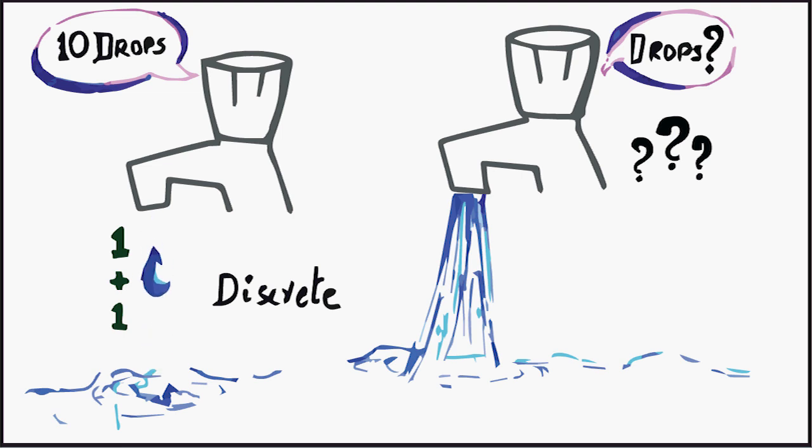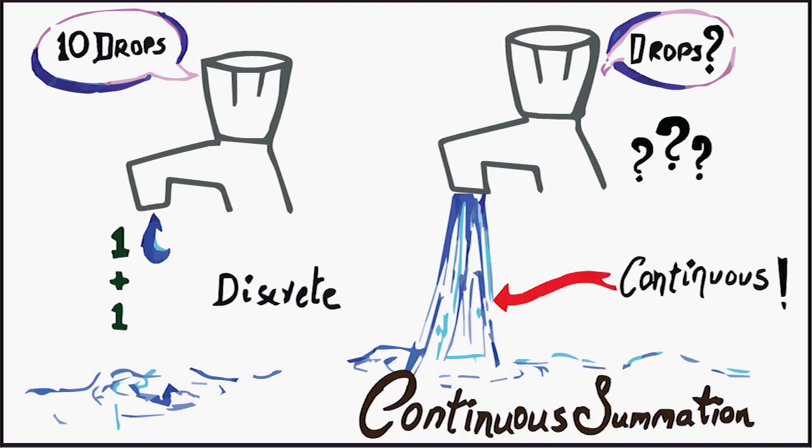On the other hand, when the tap was completely open, you were not able to find the fundamental quantity to sum up. The flow of water was continuous. As our mini-experiment suggests, we need some sort of a continuous summation tool to handle such situations.